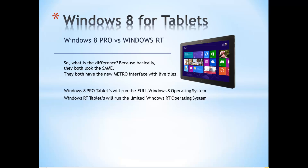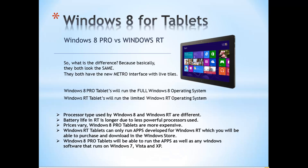Windows 8 Pro is a full-fledged operating system designed for high-end, power-hungry Intel processors such as the i3 or i5. ARM processors are designed for mobile and tablet experiences and yield long battery life because they consume less power. However, the Intel processors used by Windows 8 Pro tablets are powerful but require higher power consumption, which results in shorter battery life.